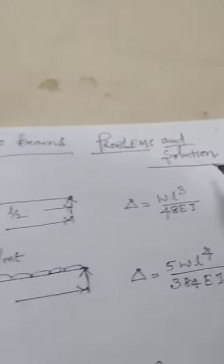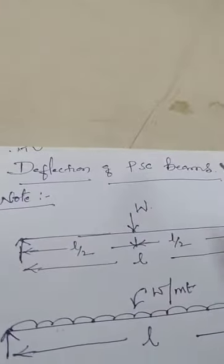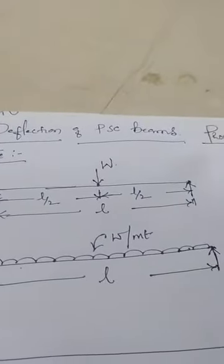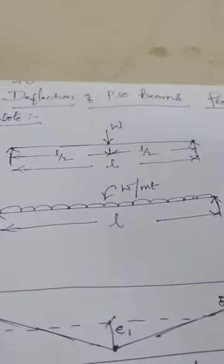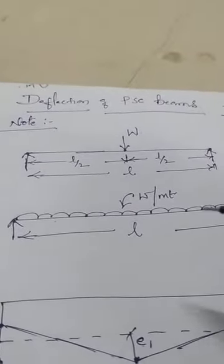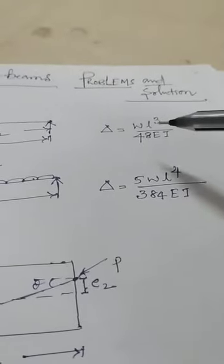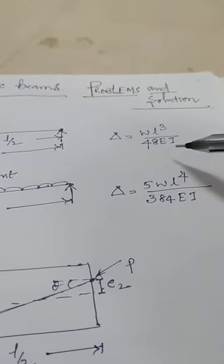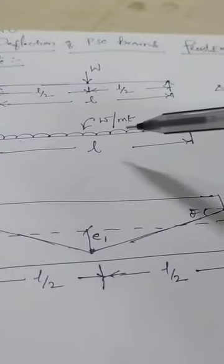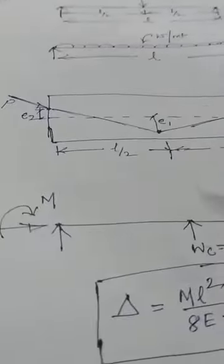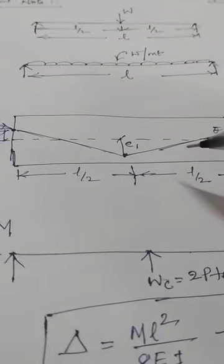Welcome to the topic 'Deflection of Beams: Problems and Solutions.' The concept of deflection of prestressed concrete beams has already been explained. Before going to problems and solutions, it is better to recall all the formulas once again. For a simply supported beam carrying a central concentrated load, the formula is WL³ divided by 48EI. For a simply supported beam carrying UDL, it is 5WL⁴ divided by 384EI.